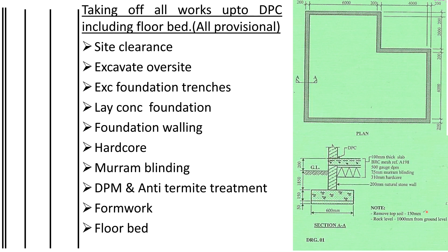After reducing the level, we excavate the foundation trenches. Foundation trenches are excavated according to the drawing — in the section you can see the width is 600mm, so we excavate 600mm all around the building. In the foundation trench, we lay blinding first at 50mm thickness all around, then we do the oversite concrete — vibrated reinforced concrete — at 150mm thickness. After the concrete, we proceed to foundation walling, building walls all around.